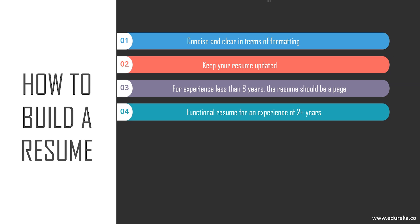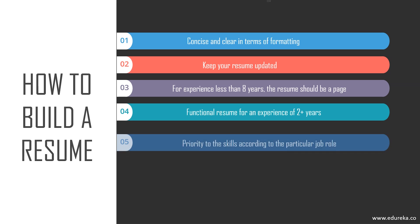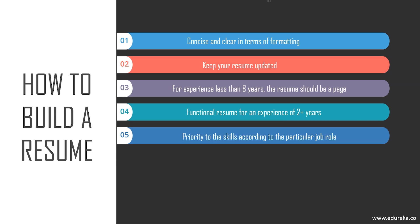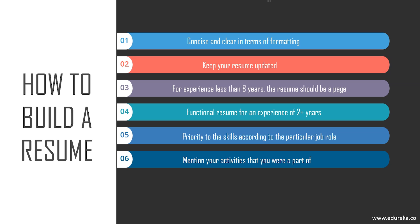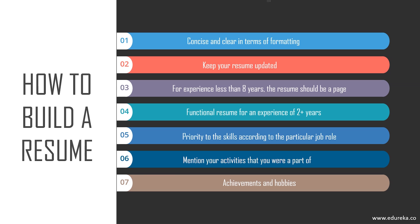Try to make a functional resume if you have two-plus years of experience, putting all relevant experience rather than flooding it with everything. Give priority to skills required for the particular job, list out activities and mention your role in them — this is where you showcase interpersonal skills like leadership and being a team player. You can also add a few awards to prove your potential, and include hobbies as they help in breaking the ice with the interviewer and show you are an all-rounder.